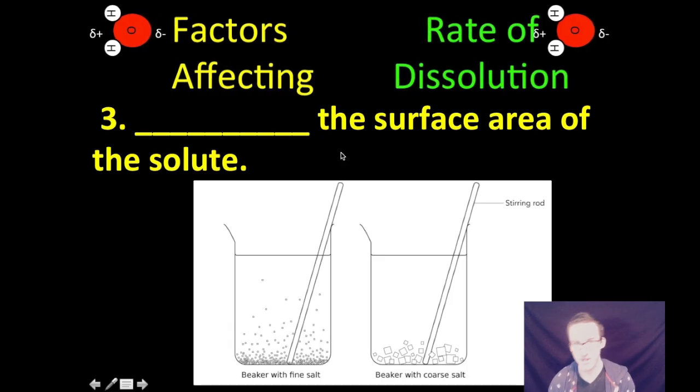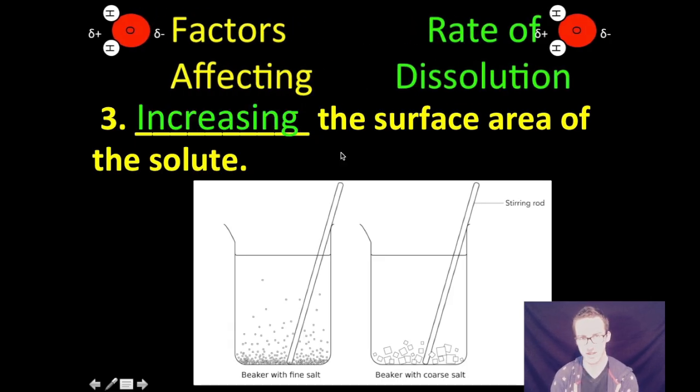And then finally, factor number three: increasing the surface area of the solute will also affect how fast or how slow you get something to dissolve. So as you take a look at your screen there, you're given an image of a beaker with a very fine salt and a beaker with a coarse salt. The more fine the salt is, the more surface area that you have available, and therefore you'll be able to dissolve the solute much more quickly.